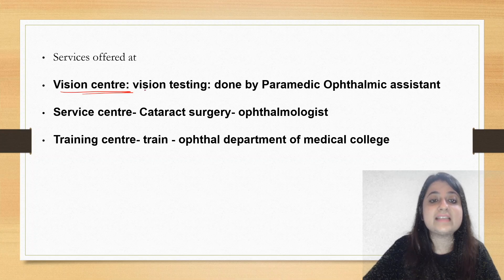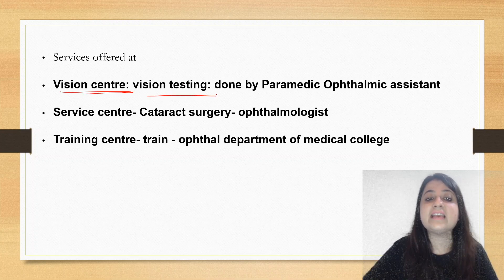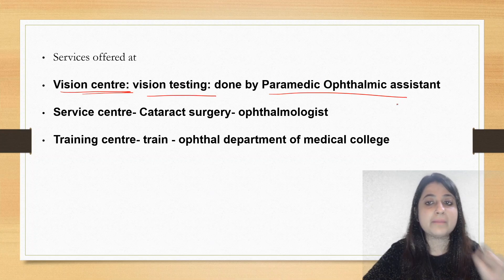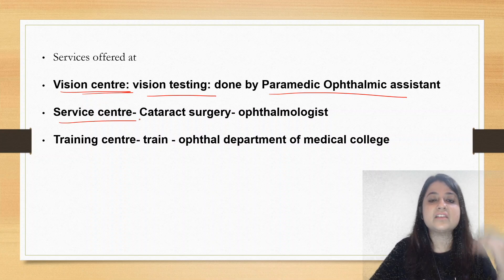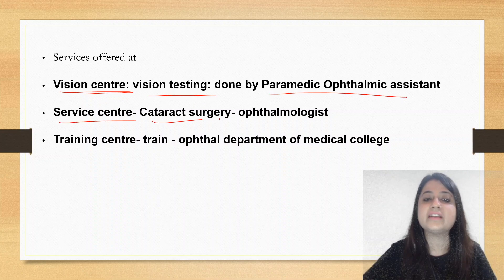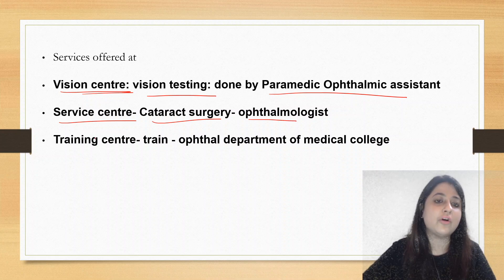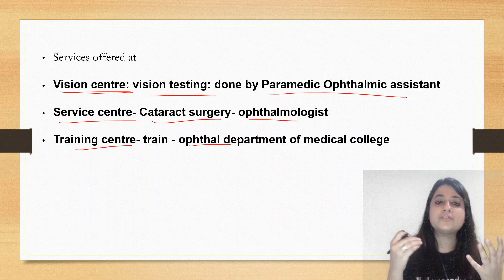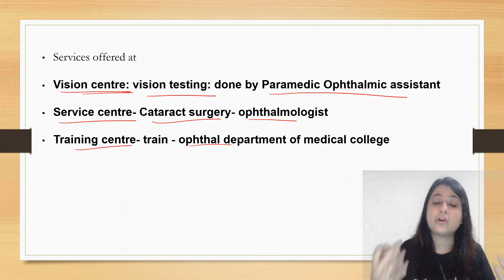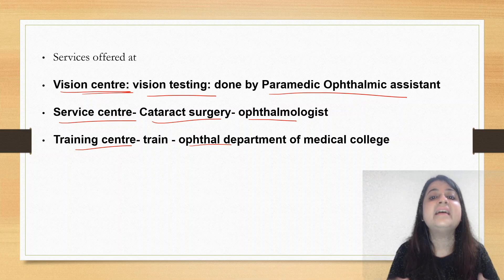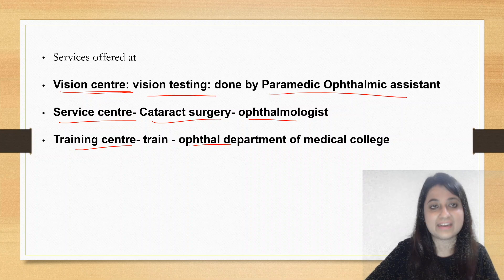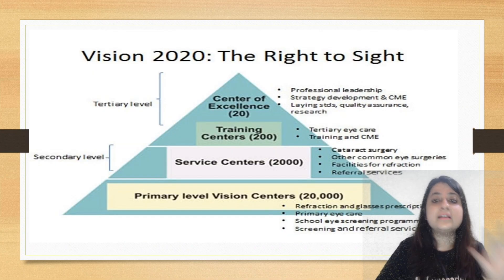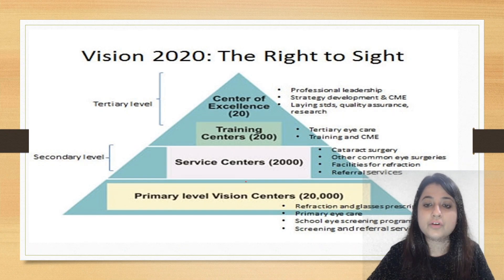Regarding services offered: Vision Centers primarily perform vision testing, done by a paramedical ophthalmic assistant. Service Centers operate from CHC level onwards, where cataract surgeries are performed. Training Centers are essentially medical colleges where training and research activities are carried out.